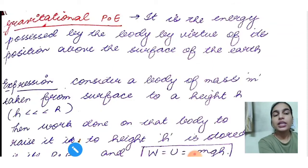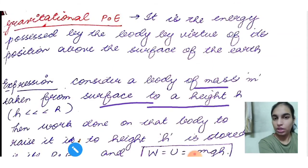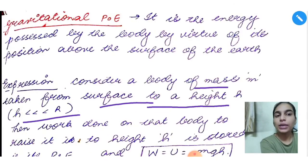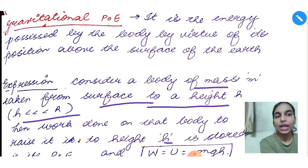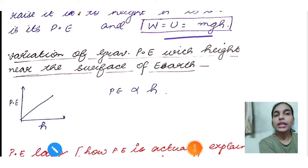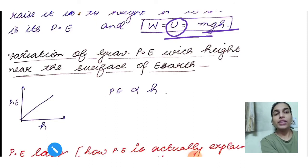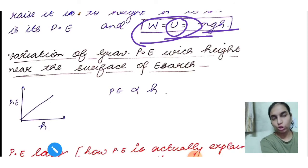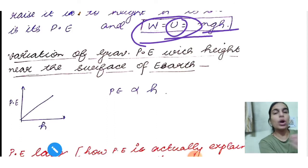Consider a body of mass m taken from the surface to height h where this condition is satisfied. The work done on that body to raise it to height h is stored as its potential energy, given by W = U = mgh. This relation W = U comes from the law of conservation of energy — energy can neither be created nor destroyed — so we can write work done equals potential energy.